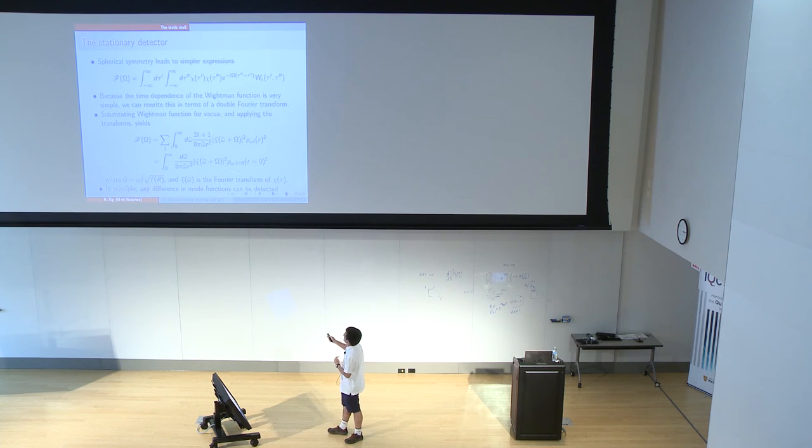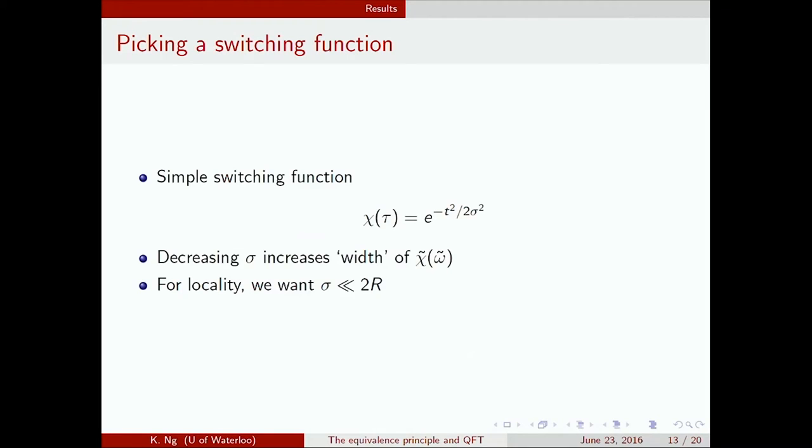There's a bit of a catch here. As I said, this is a Fourier transform. If we want to do a local measurement as I said earlier, we have to limit the extent of the switching function in time, which means that the width of the Fourier transform in frequency space is going to be quite broad. We picked a Gaussian, which has the property that if you decrease the width of a Gaussian, you increase the width of the Fourier transform. And as I said before, for locality we want the width to be much less than the crossing time.